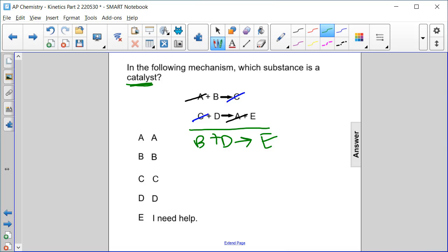So remember, catalysts and intermediates never show up in the overall reaction. A catalyst is used as a reactant first and then produced as a product later. So we have two choices here, A and C. Which one is used as a reactant first, and then produced as a product later?